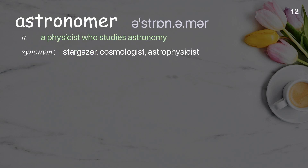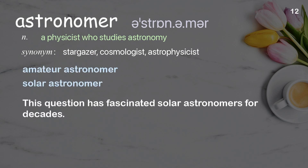Astronomer: A physicist who studies astronomy. Examples: Amateur astronomer. Solar astronomer. This question has fascinated solar astronomers for decades.